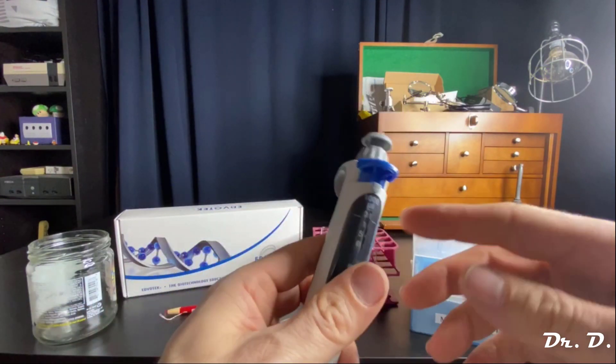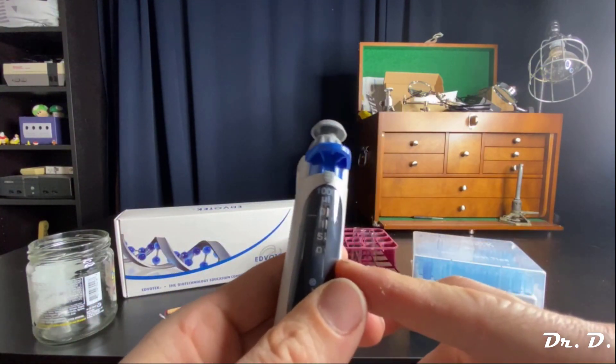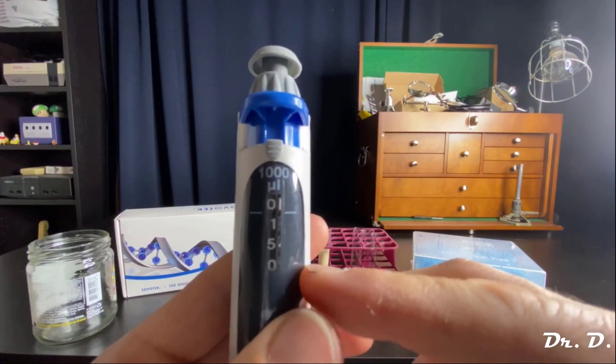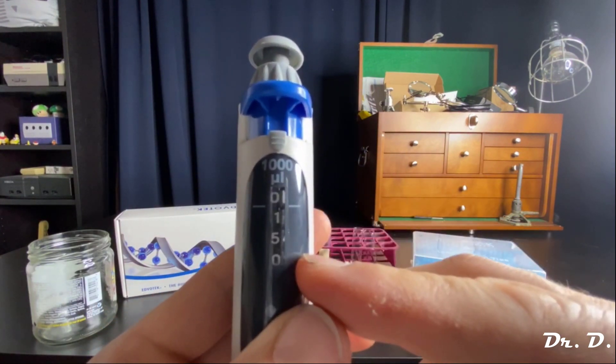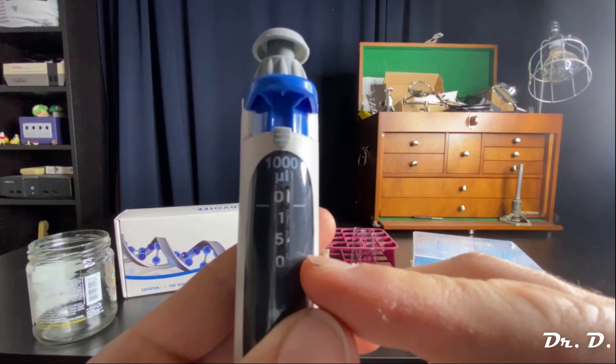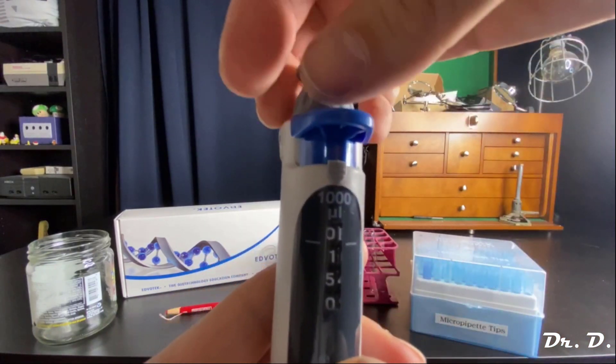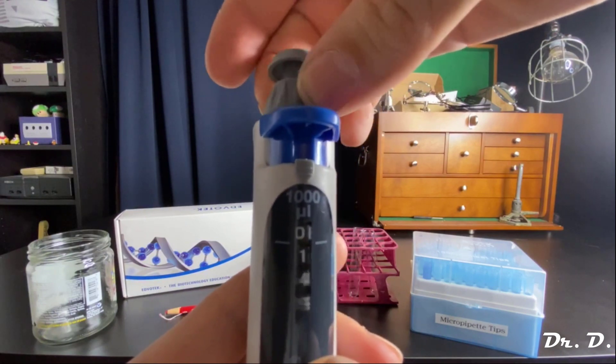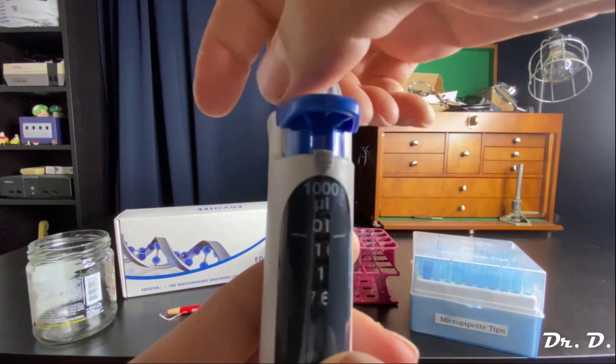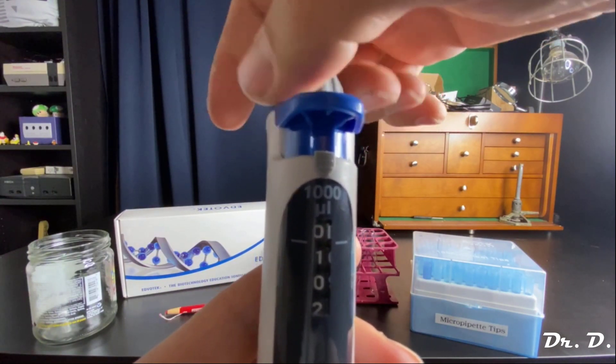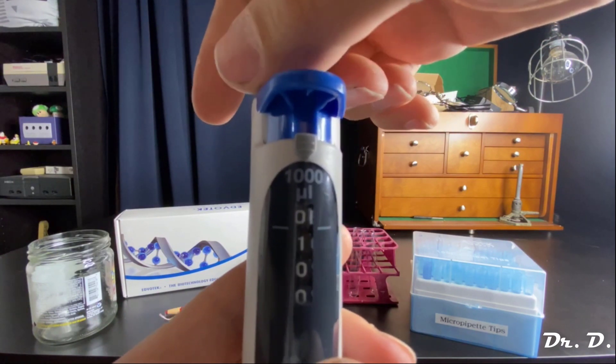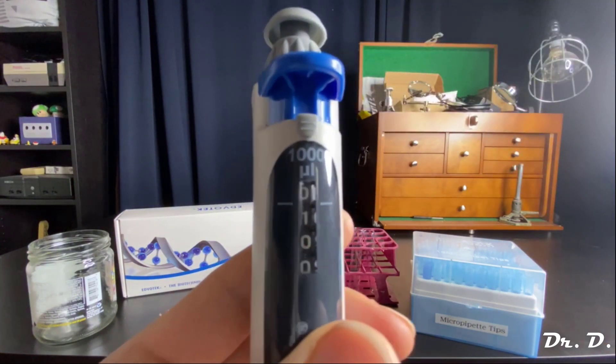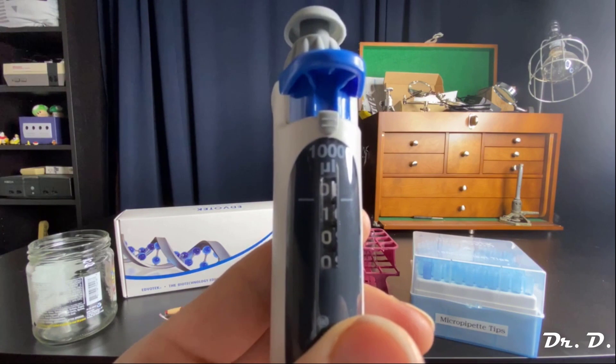To set it, you have to look at the dial on the side. This is the dial that indicates the volume setting of this particular micropipettor. The lowest setting, if we turn this gray dial at the top, would be 0, 1, 0, 0, which means 100 microliters.